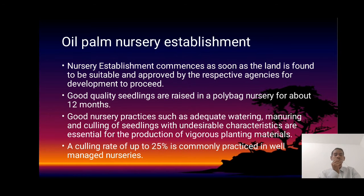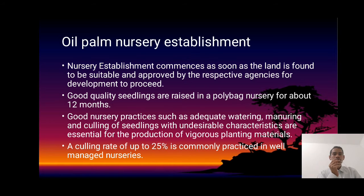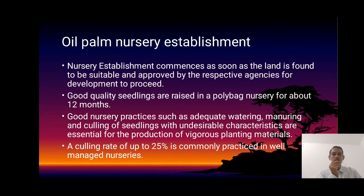Oil palm nursery establishment commences as soon as the land is found to be suitable and approved by the relevant agencies to proceed. Good quality seedlings are raised in polybag nurseries for about 12 months. Good nursery practices such as adequate watering, monitoring, and culling of seedlings with undesirable characteristics are essential for the production of vigorous planting material. A culling rate of up to 25% is commonly practiced in oil palm nurseries.